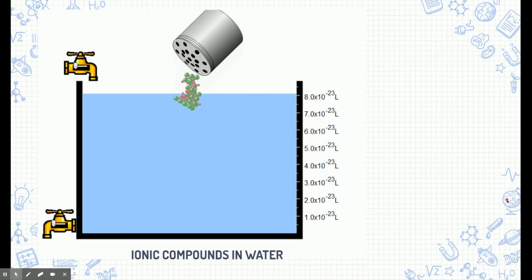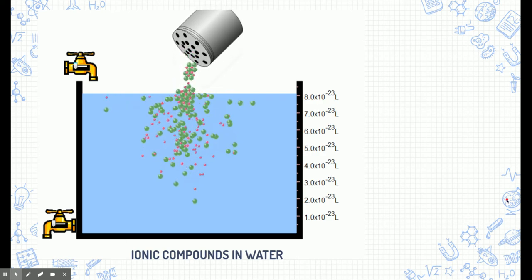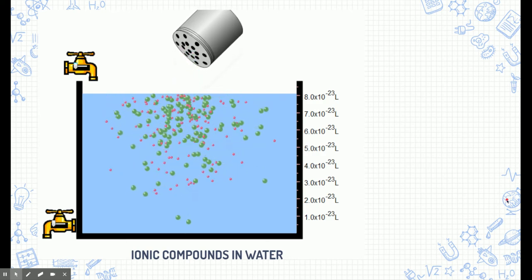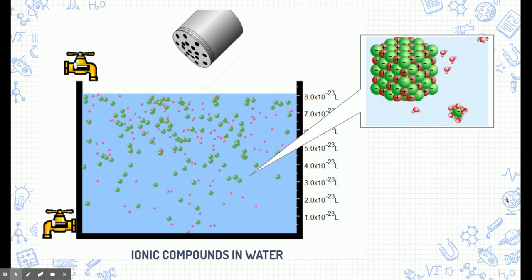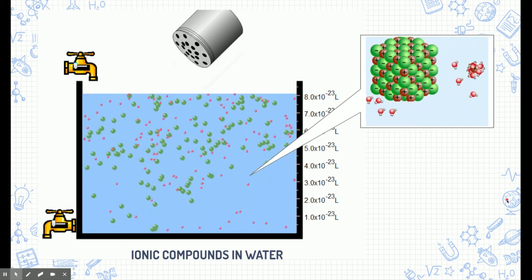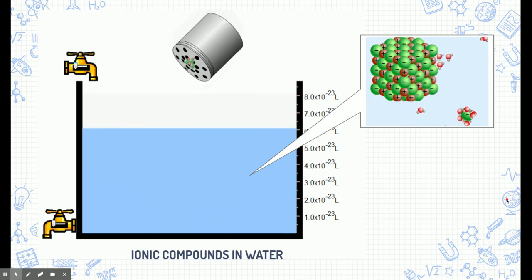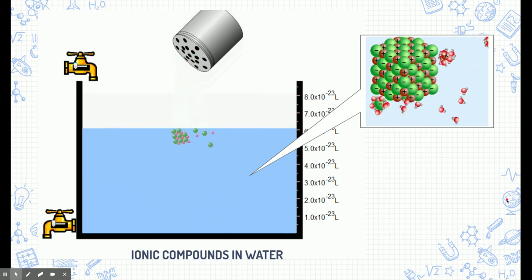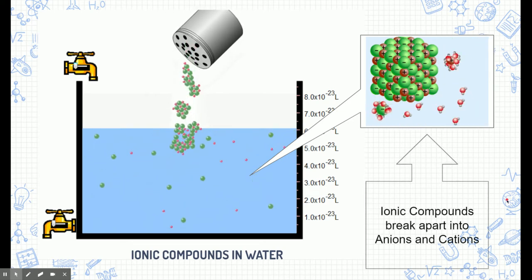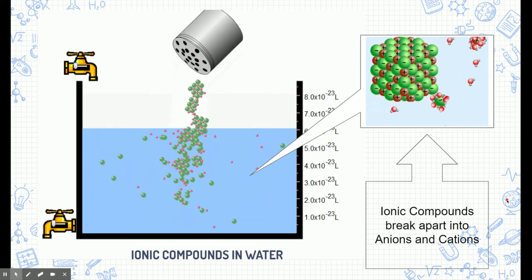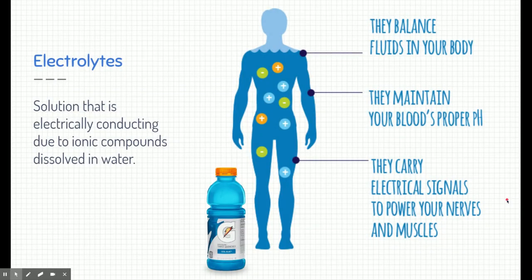Here's a simulation showing an ionic salt dissolved in water — think like sodium chloride. The water molecules are taking those ionic salts and ripping apart the cations and anions. They're dissociating, dissolving, and spreading apart in the water. So ionic compounds break apart into their anions and cations.